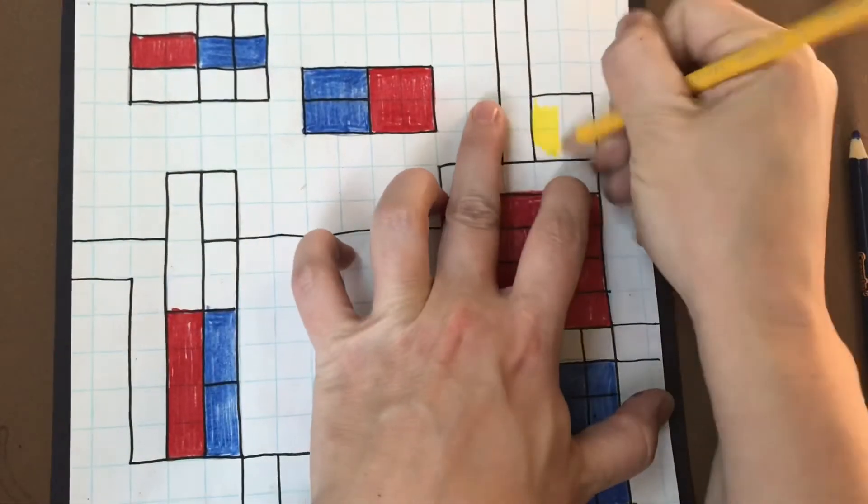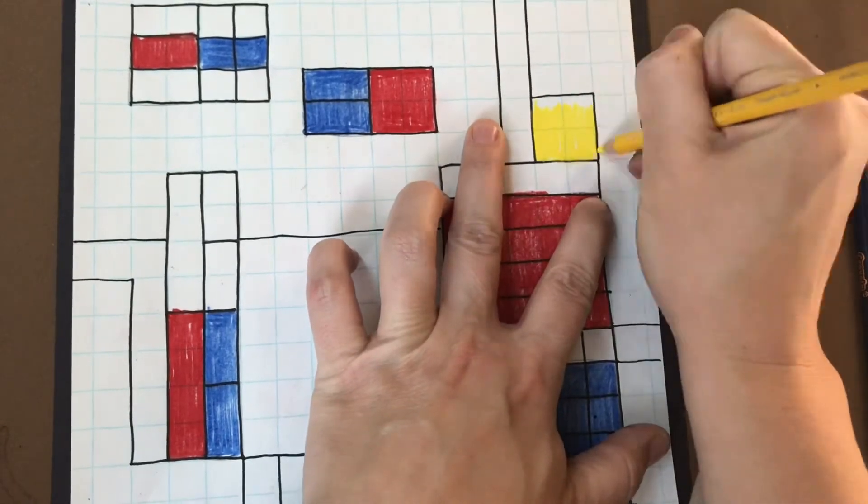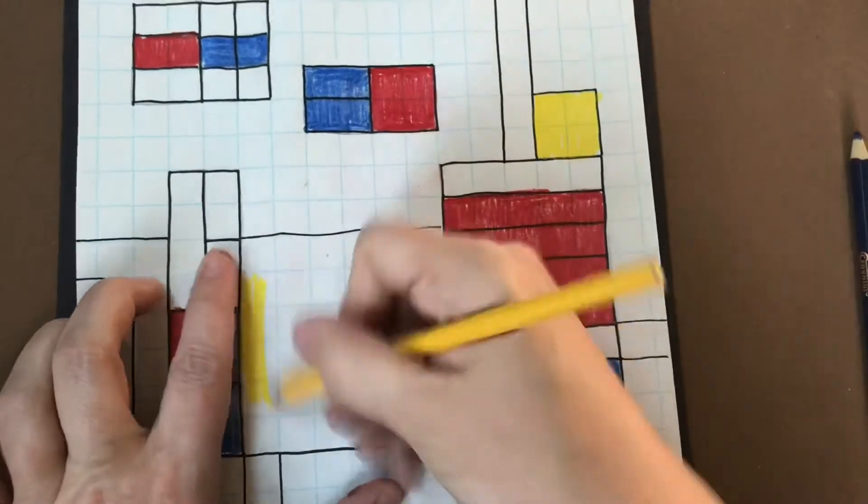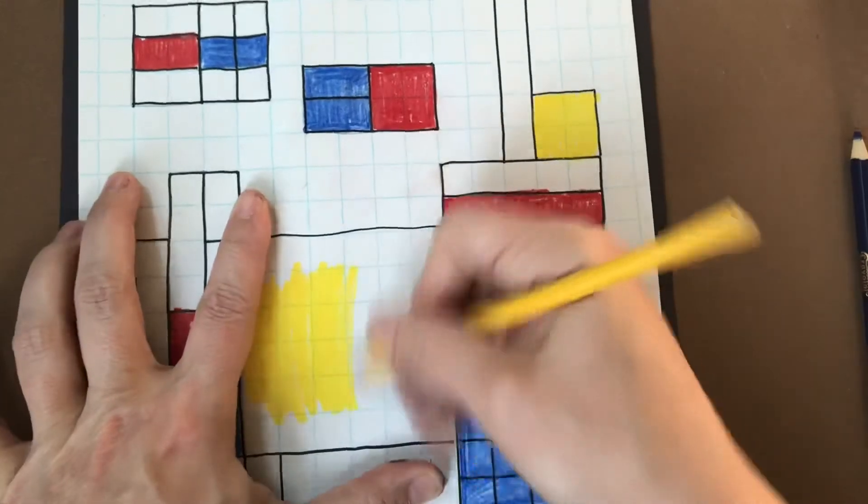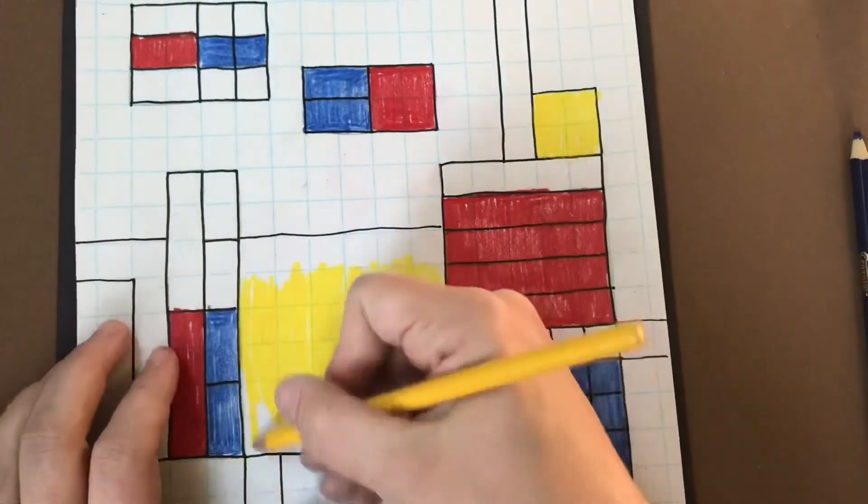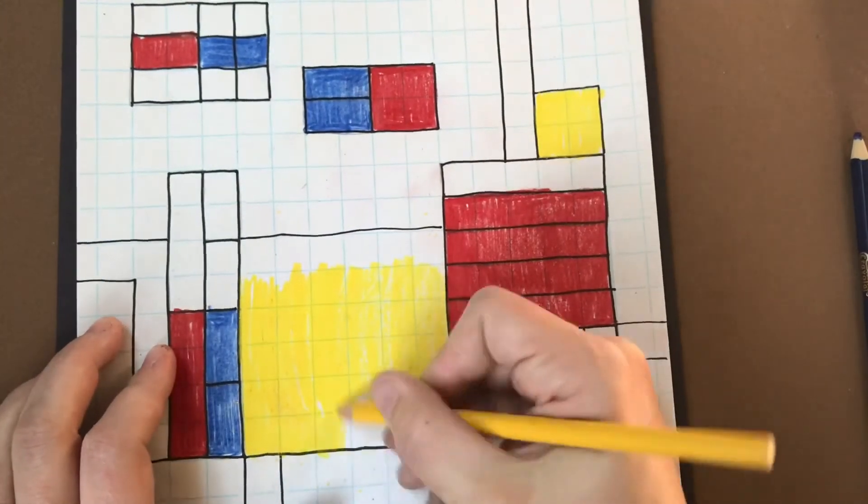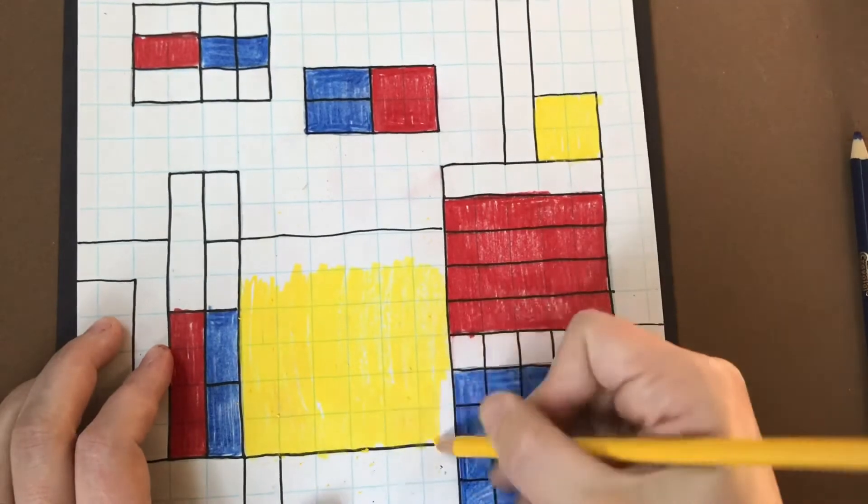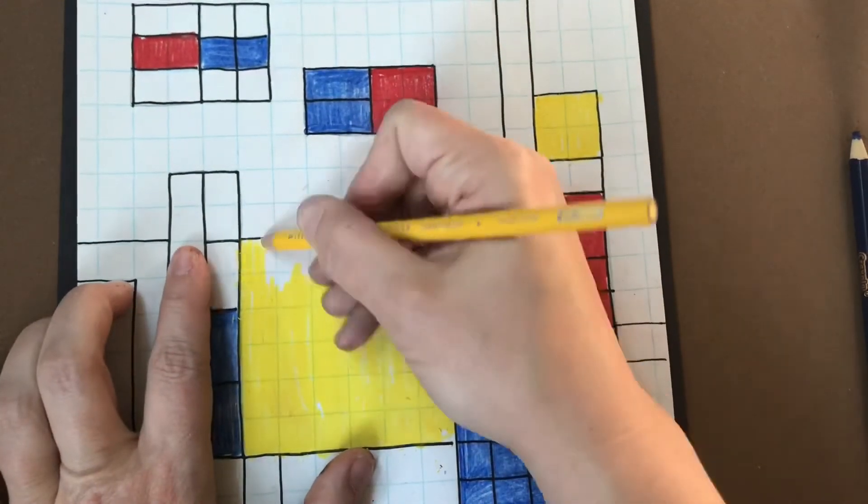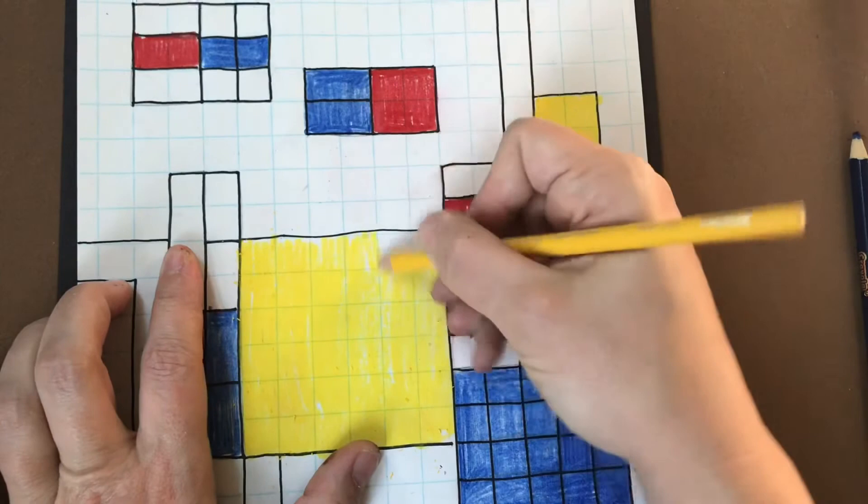Also inspired by Mondrian, I'm adding some yellow. I'm making sure that my yellow doesn't interact or interfere with my equivalent fractions, but I like how all three of these colors used together in my art makes it feel so balanced. I can see why he used these three colors.